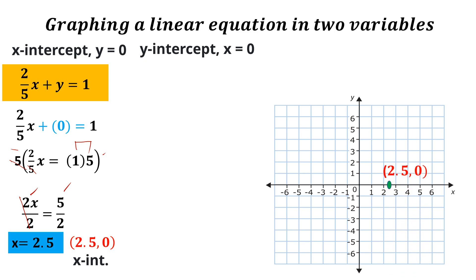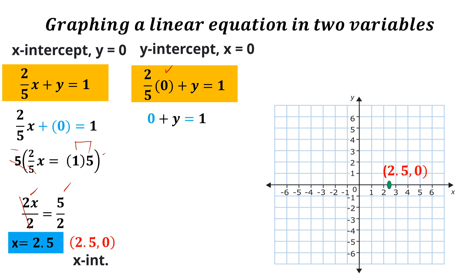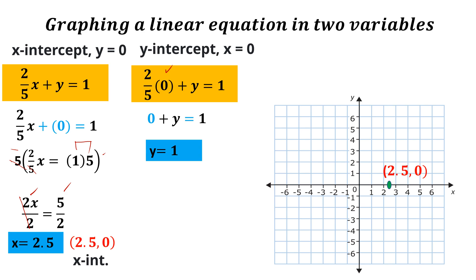Let's proceed to getting the y-intercept. This time x should be 0. So 2.5 times 0 is equal to 0, and then y is equal to 1. The y-coordinate of our y-intercept is 1. Therefore, plotting (0, 1) is there. Then connecting the points — that's it.